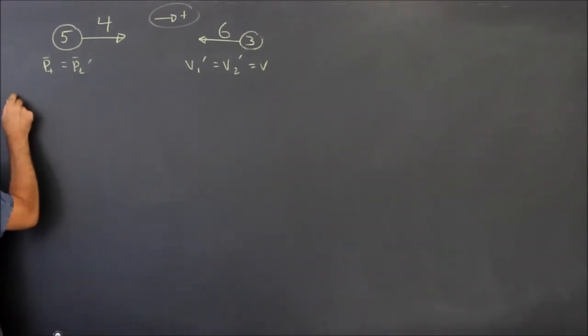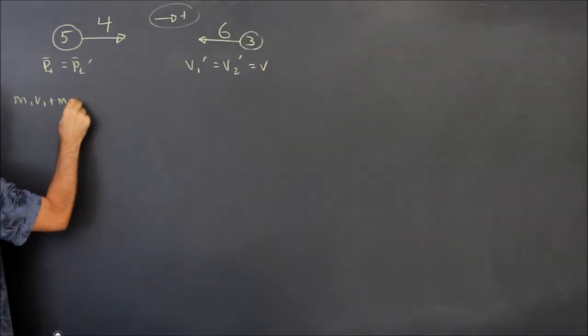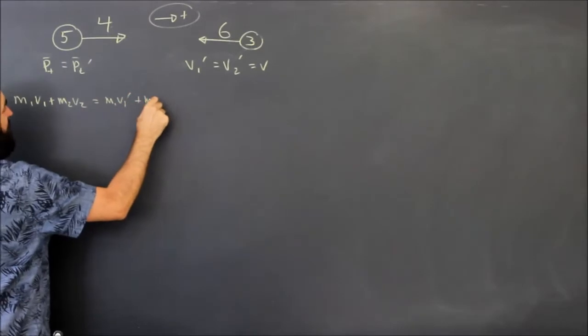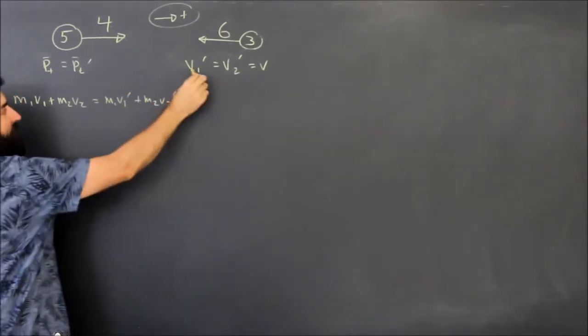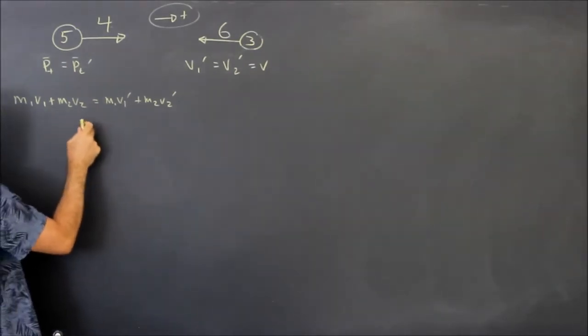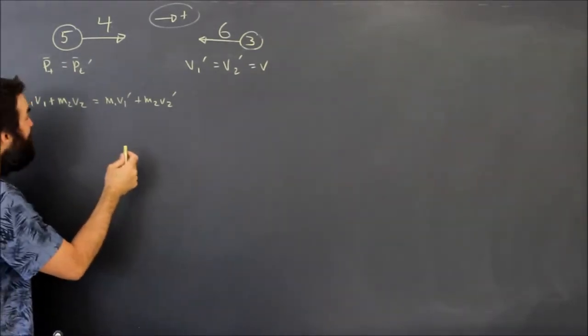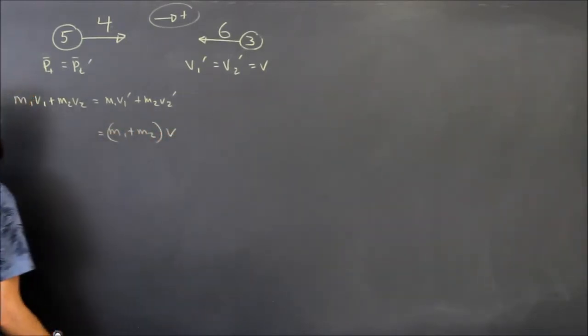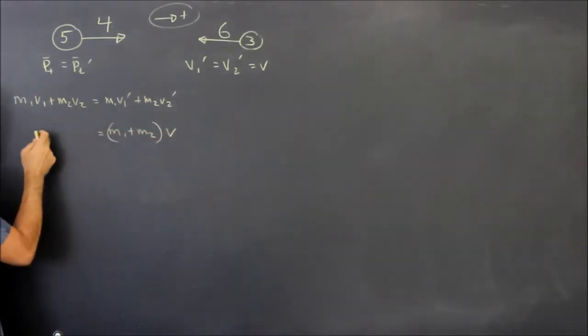The total momentum before equals the total momentum afterwards, which means that M1 V1 plus M2 V2 equals M1 V1 prime plus M2 V2 prime, but V1 prime and V2 prime are the same. So that means M1 V1 plus M2 V2 equals M1 plus M2 times this thing called V. Now we did this already.